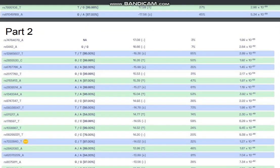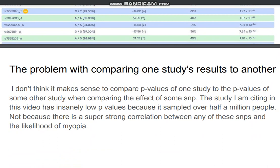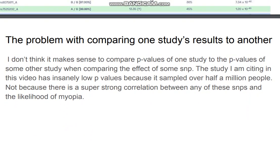This is part two of the SNP list. I didn't include all seven screenshots since the remaining SNPs are not as significant or important. One important caveat: comparing p-values across different studies doesn't really make sense. The study cited in this video has insanely low p-values because it sampled over half a million people — not because there is a super strong correlation between any of these SNPs and the likelihood of myopia.